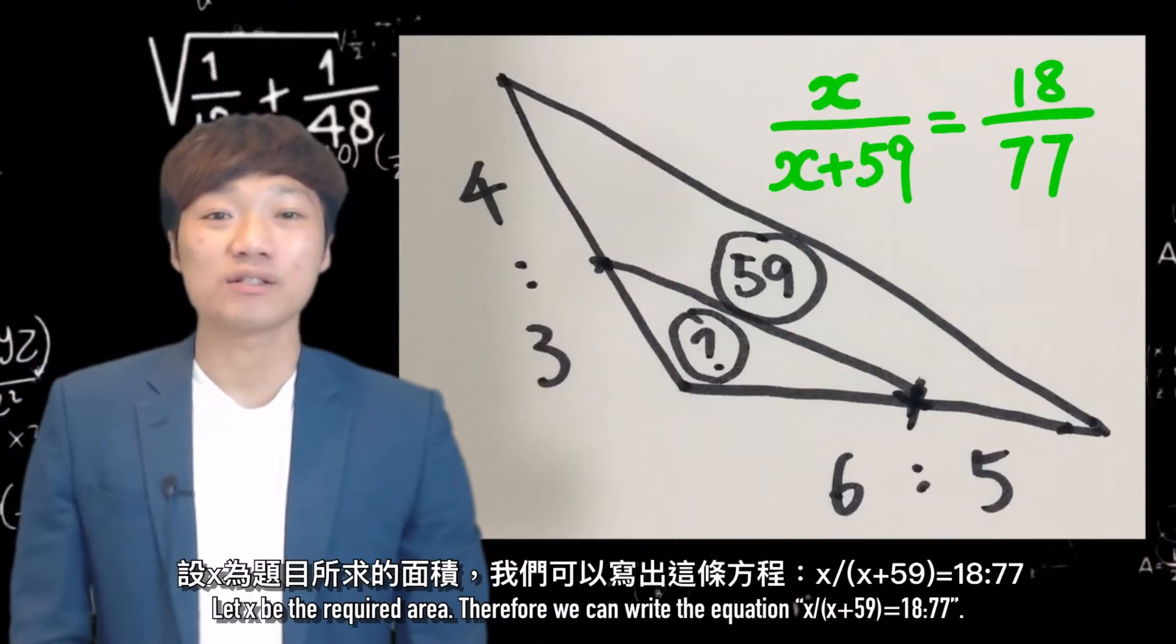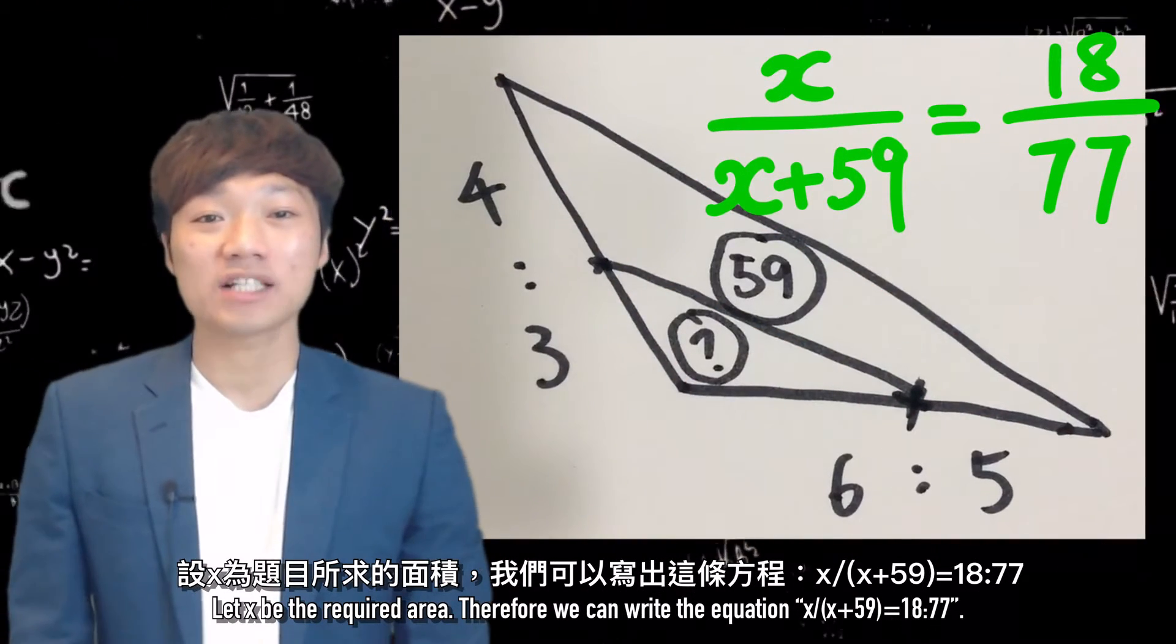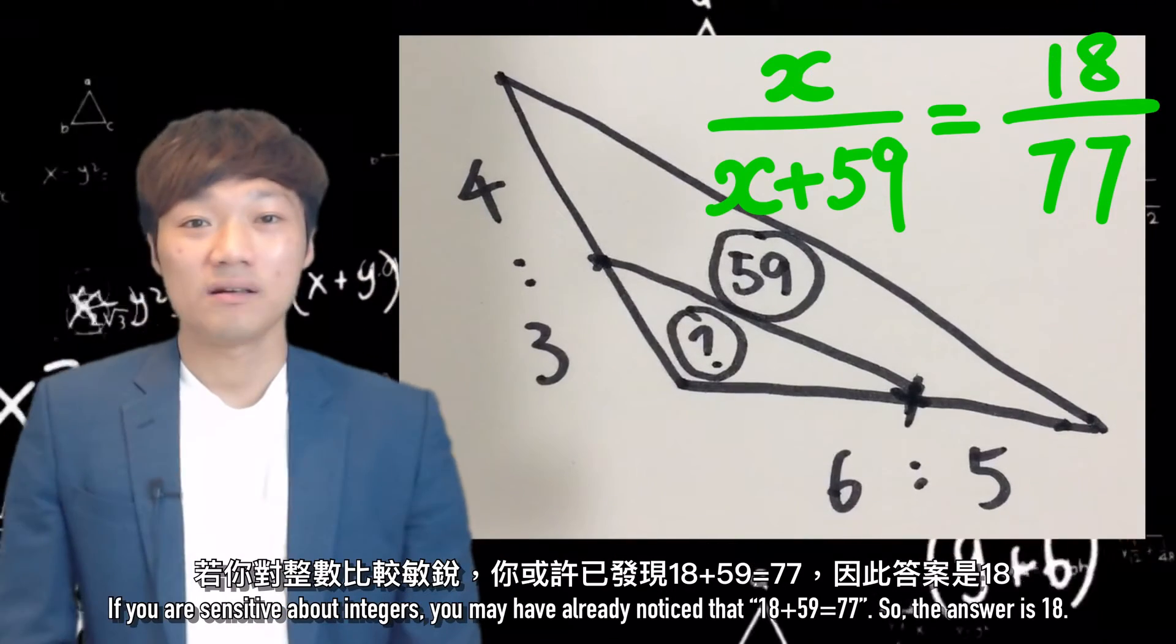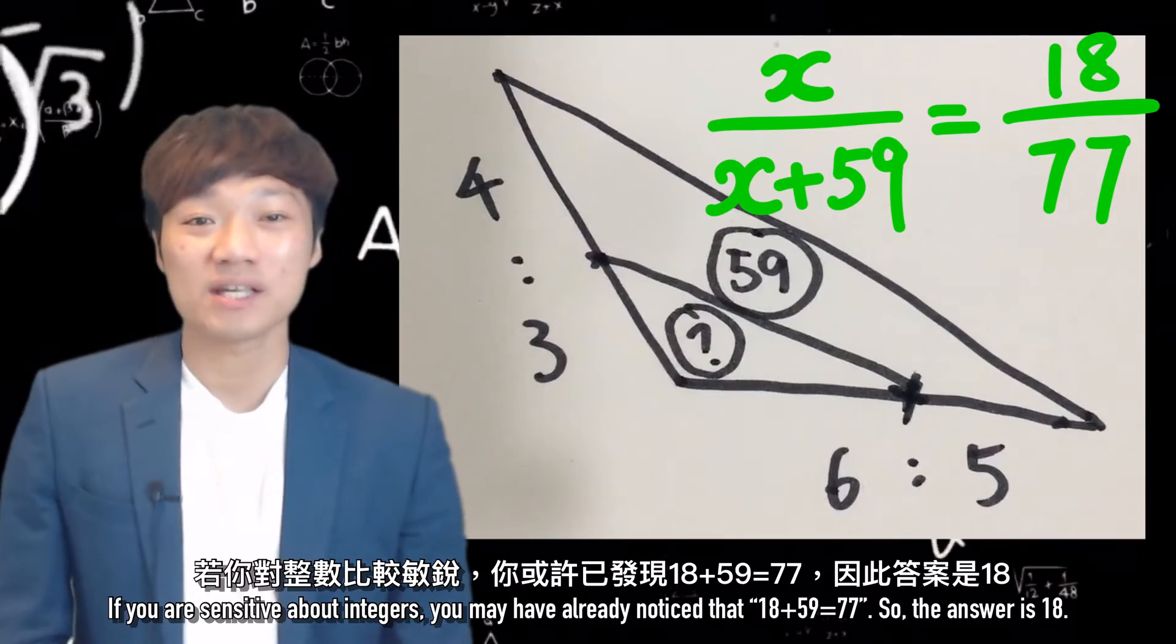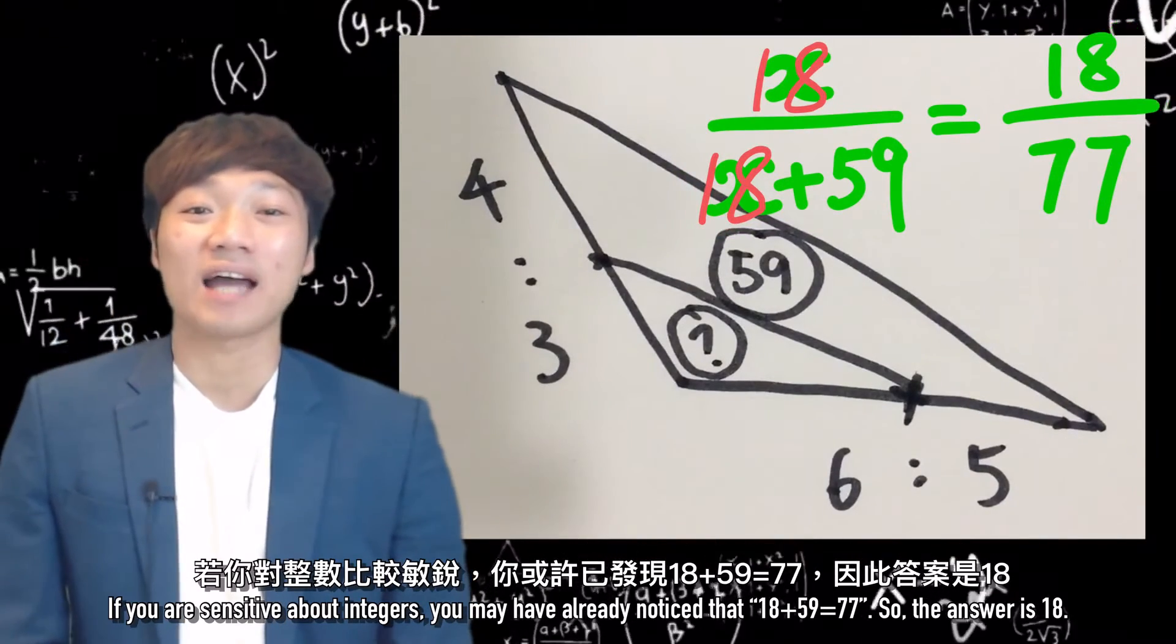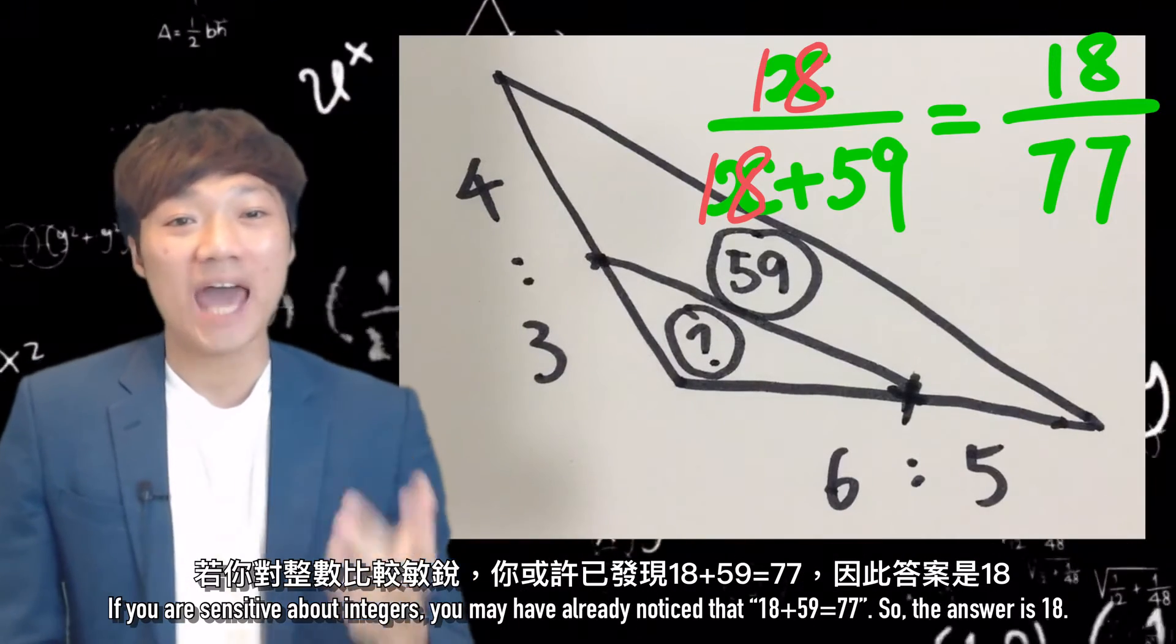Therefore, we can write the equation x over x plus 59 equals 18 to 77. If you are sensitive about integers, you may have already noticed that 18 plus 59 is 77. So the answer is 18.